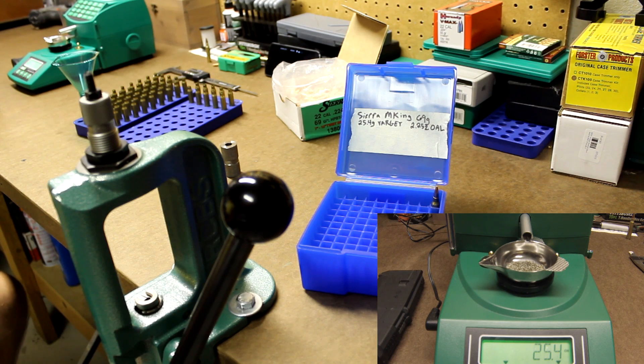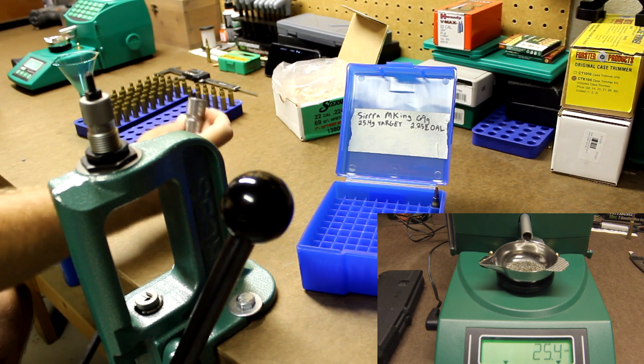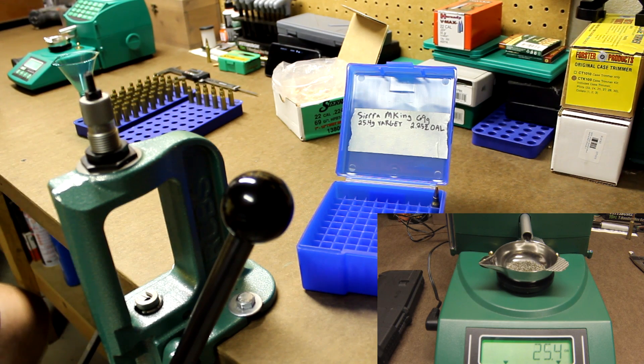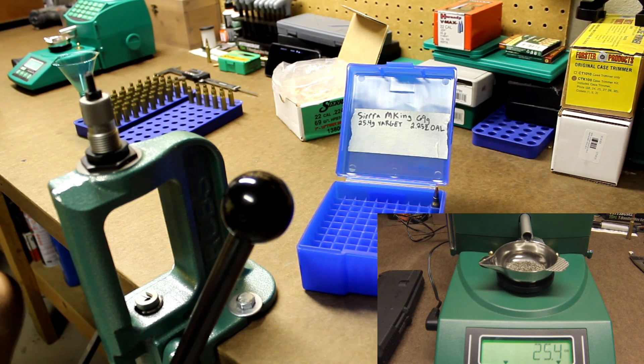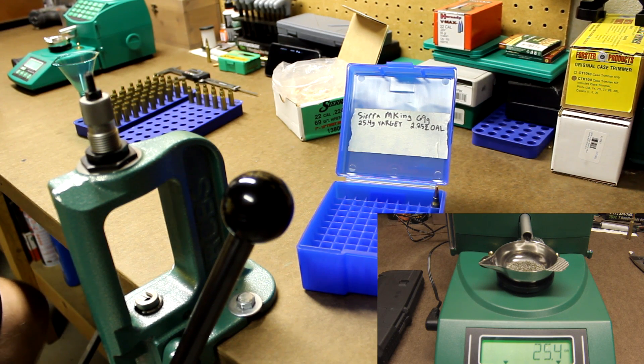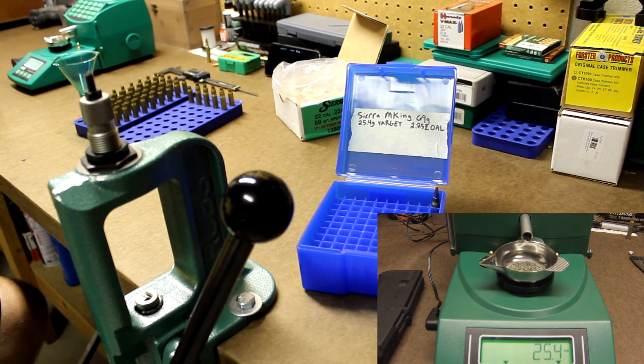At this time when you get done seating your bullet and throwing them in your headspace gauge, this is basically the last time that you're going to have to visually inspect each cartridge to make sure there's no cracks in your brass. I know you've done this in other parts of the process, but this is the last chance. So you always want to make sure to visually inspect every single one of them.